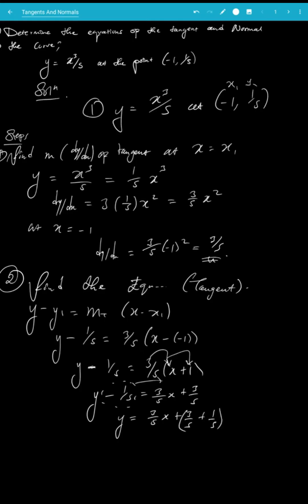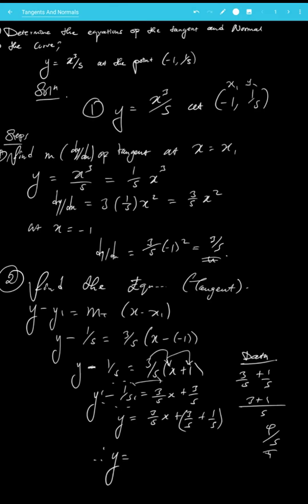Combining the constants: 3/5 + 1/5, with common denominator 5, gives 3 + 1 = 4, so 4/5. Therefore the equation of the tangent is y = (3/5)x + 4/5, and that is your final answer.